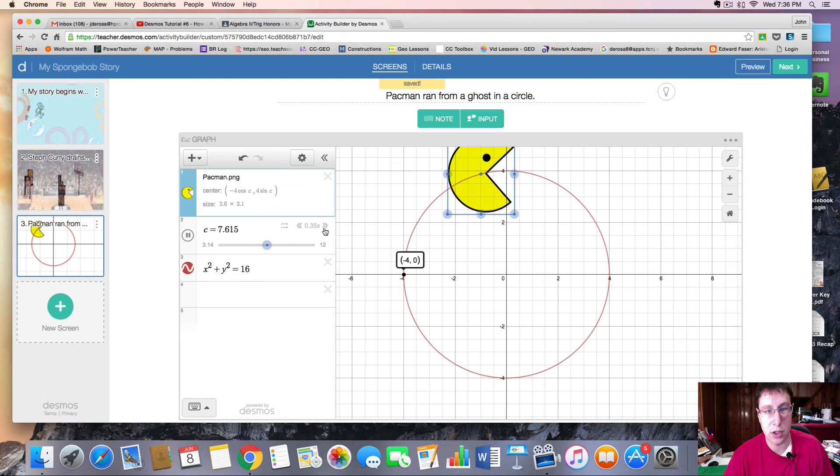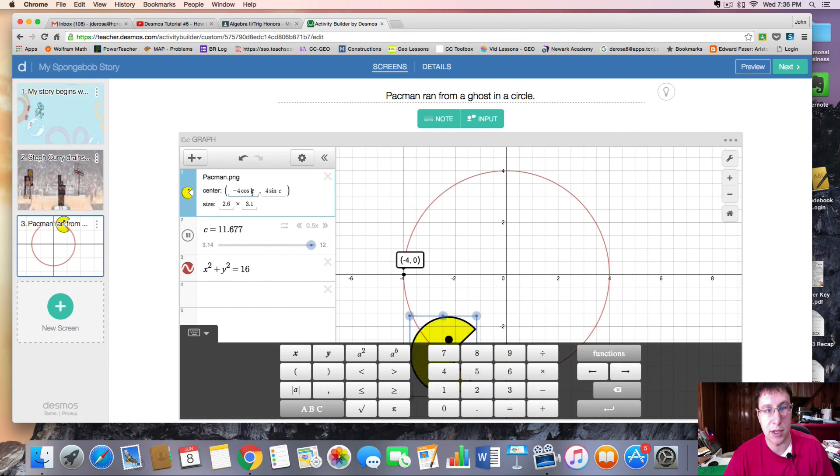So one way to slow Pac-Man down is to change the slider speed. I can speed him up, and I can slow him down. Another way to slow him down is to mess with the period of the function. Watch what happens if I change this to a 2. And this to a 2. They have to match.